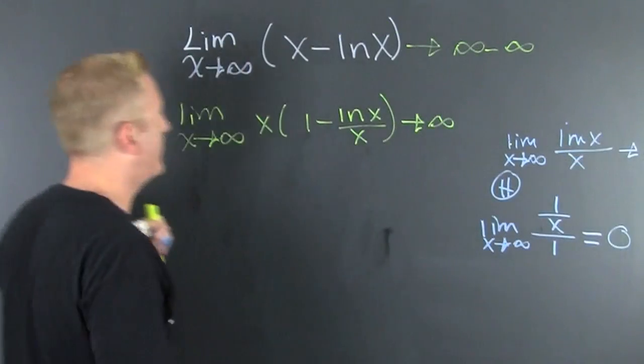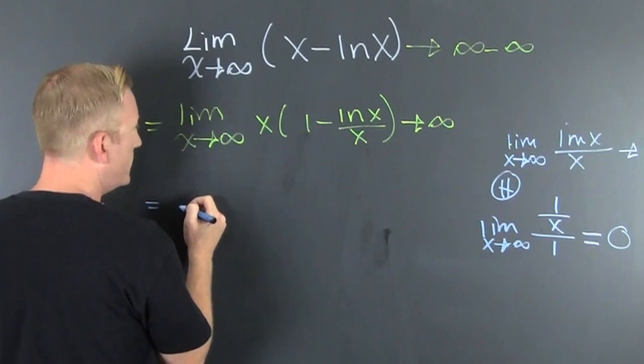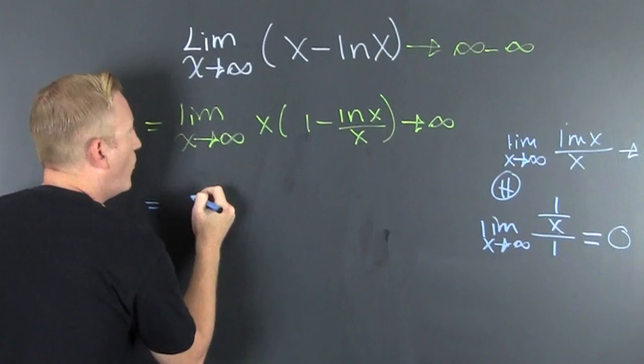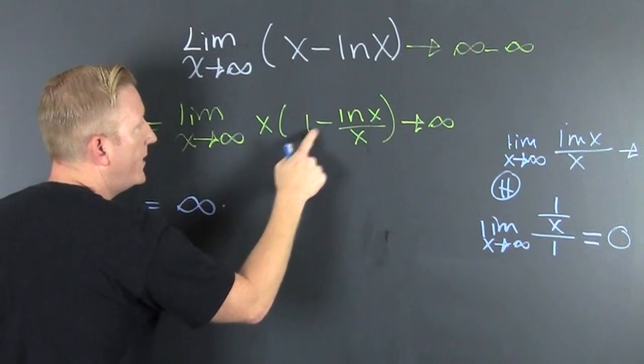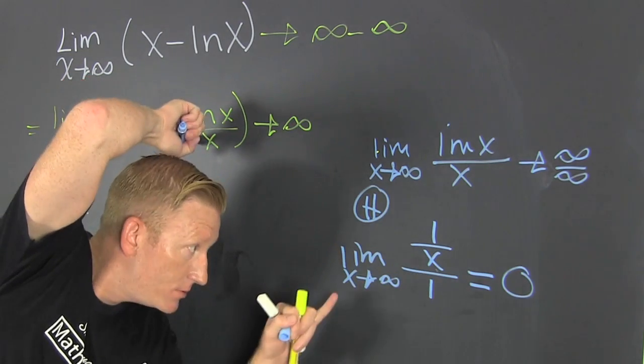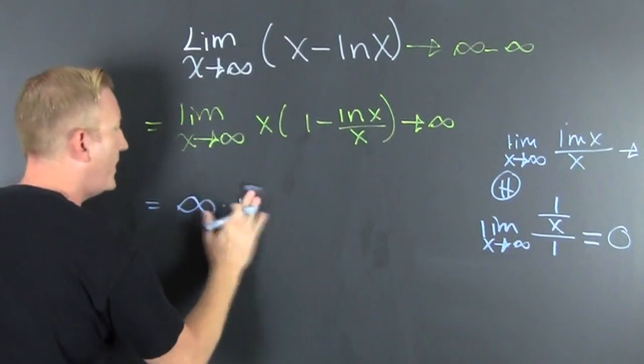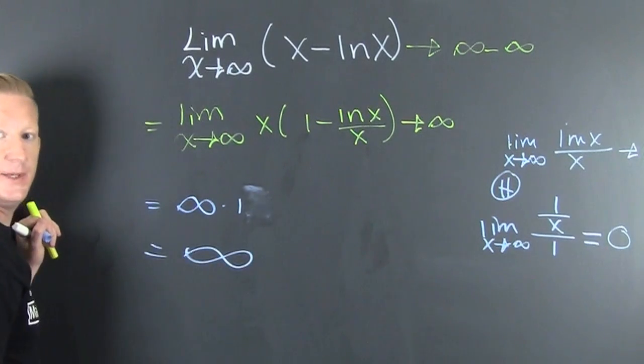So what do we have here? We have that this is infinity times 1 minus zero, which is 1. What do we have? We have infinite limit.